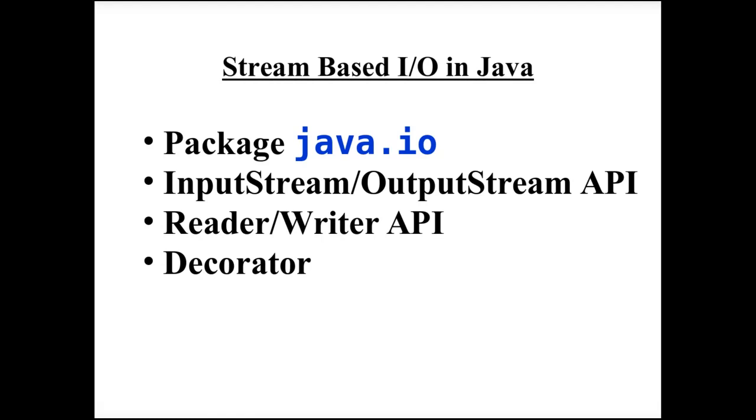An important feature is that all APIs — the InputStream, OutputStream, and Reader-Writer APIs — allow streams to be chained to each other in a pipe.